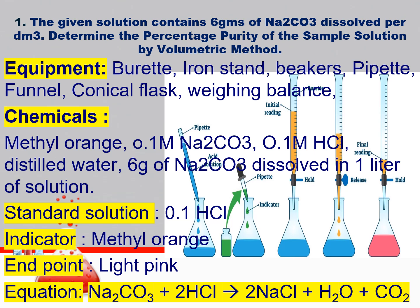Chemical equation — you are supposed to learn the balanced chemical equation also. For this titration, the balanced chemical equation is: Na₂CO₃ reacts with 2 moles of HCl and gives 2 moles of sodium chloride plus 1 mole of water and 1 mole of carbon dioxide gas.